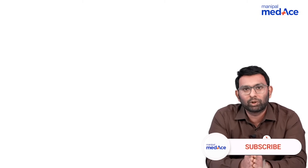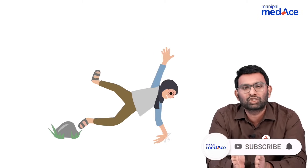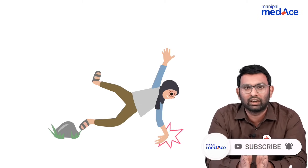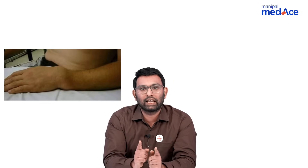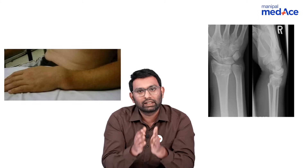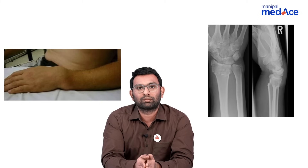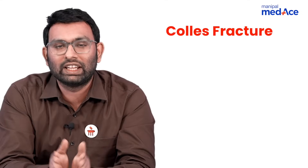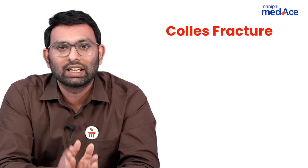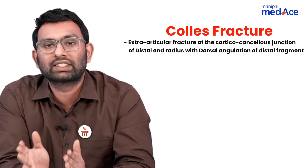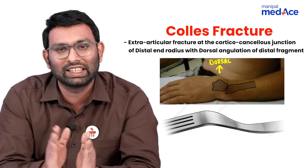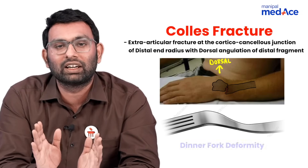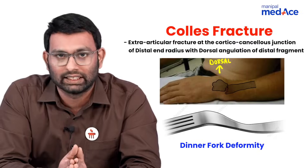An elderly postmenopausal woman comes in with a history of fall on an outstretched hand with her wrist in dorsiflexion. Her clinical images look like this and her x-rays look like this. This is a case of a Colles fracture — an extra-articular distal end radius fracture where the distal fragment goes into dorsal angulation. On clinical images, there will be a dinner fork deformity.